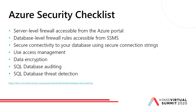A quick Azure Security Checklist: the server-level firewall is accessible from the portal — make sure it has appropriate IP address ranges and access. You can also access database firewall rules from Management Studio. Use secure connection strings, use access management policy, turn on data encryption, leverage database auditing, and use SQL Database threat detection. All these are features to help you secure your data in Azure.